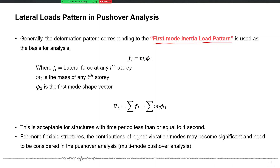This is also called the first mode inertia load pattern. 'Inertia' means you have the product of mass and that mode shape, so at any i-th story the force is calculated as the mass of that story times the ordinate of the first mode shape vector. This product gives you a force pattern, and the sum of all those story forces — that whole pattern — gives you the base shear.